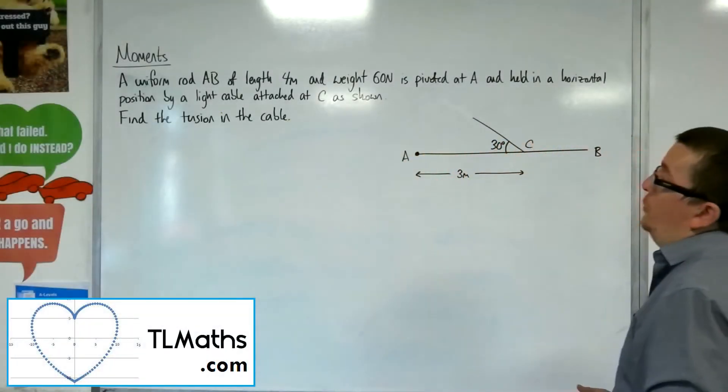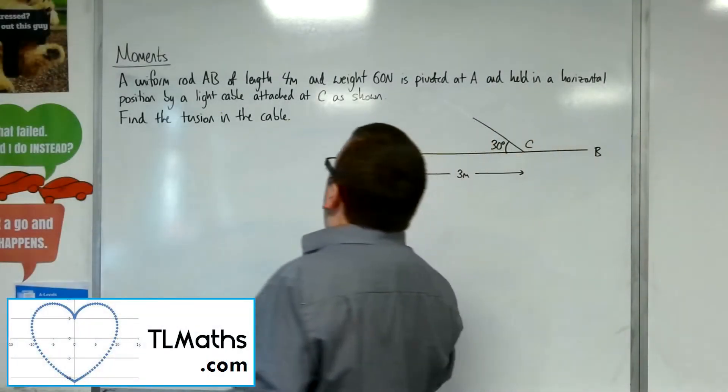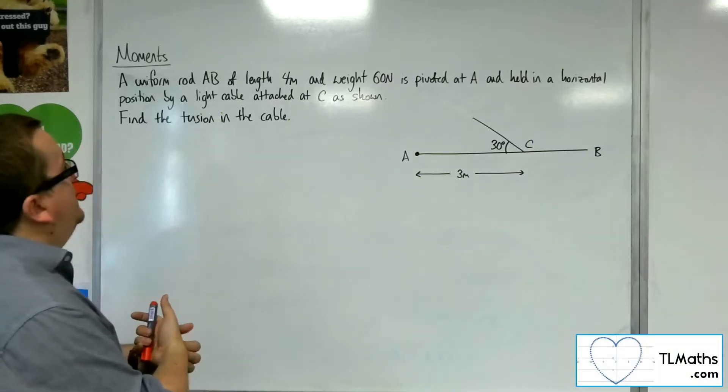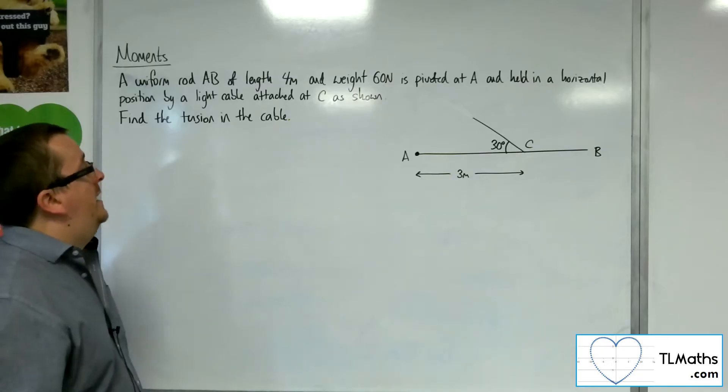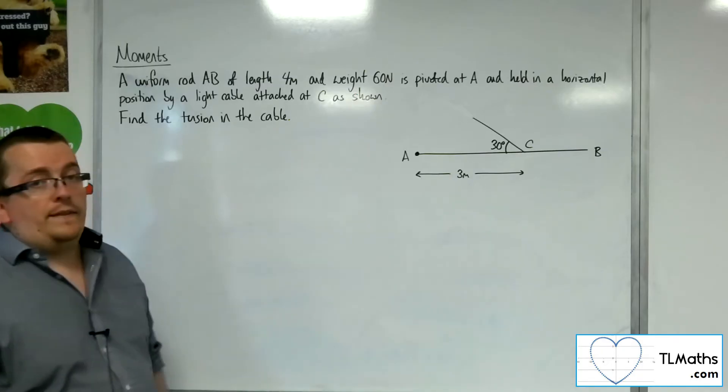In this problem we've got a uniform rod AB of length 4 meters and weight 60 newtons, pivoted at A and held in a horizontal position by a light cable attached at C as shown. Find the tension in the cable.